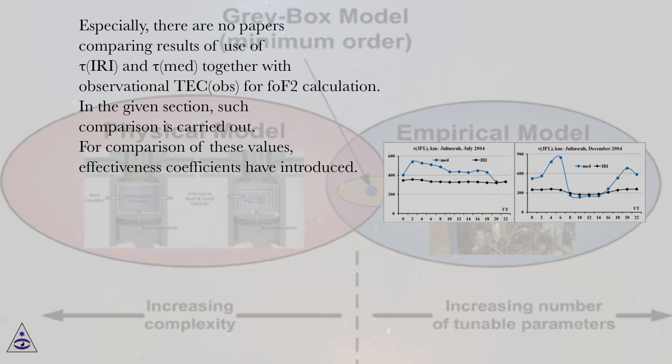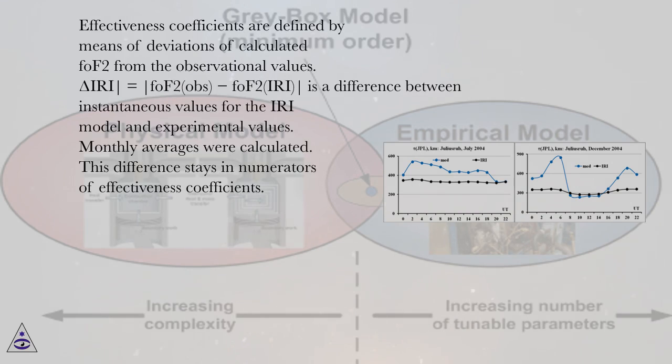For comparison of these values, effectiveness coefficients have been introduced. Effectiveness coefficients are defined by means of deviations of calculated FOF2 from the observational values. Monthly averages were calculated. This difference stays in numerators of effectiveness coefficients.